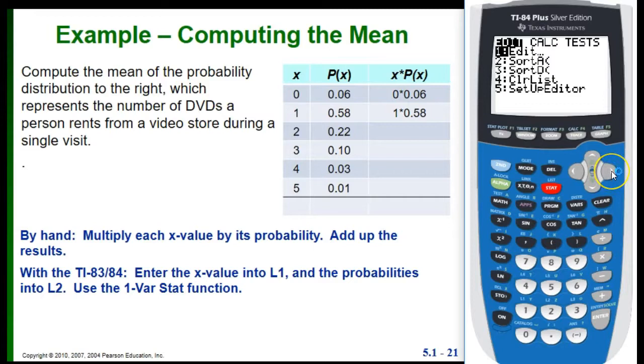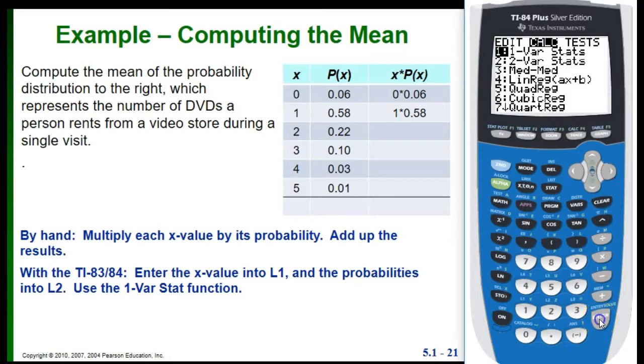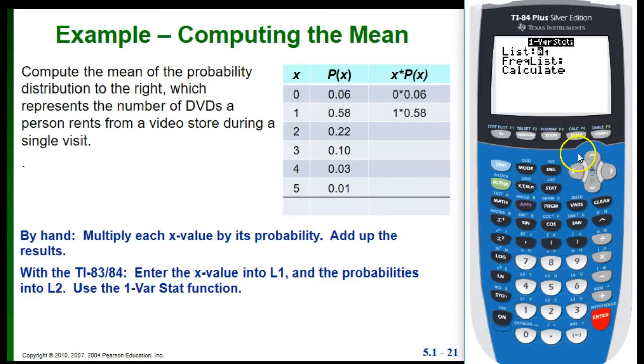I'm going to use the 1-Var Stats, so I want to go over to Calc. I'm going to select the 1-Var Stats. Now here's where it's a little bit different than the way we used this before. So since I actually have two lists that I want my calculator to look at, here where it says L1, I can leave that the way it is. That's where my X value should be. Where it says Frequency List, there I want to tell it L2. So to get L2, I'm going to use 2nd and the 2 button. So if that says L2, then I'm going to enter and enter again.